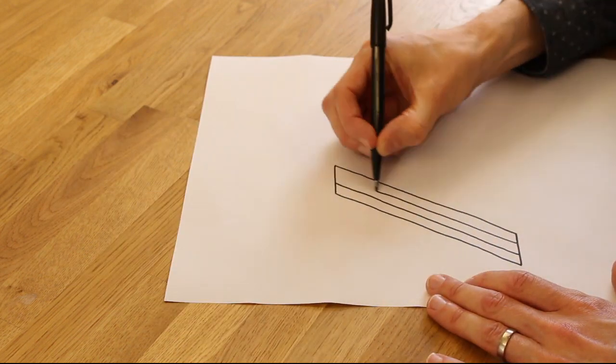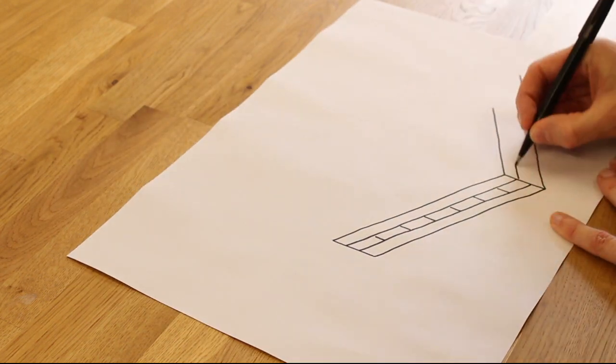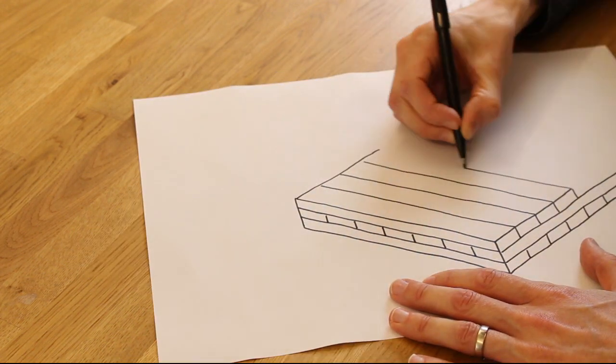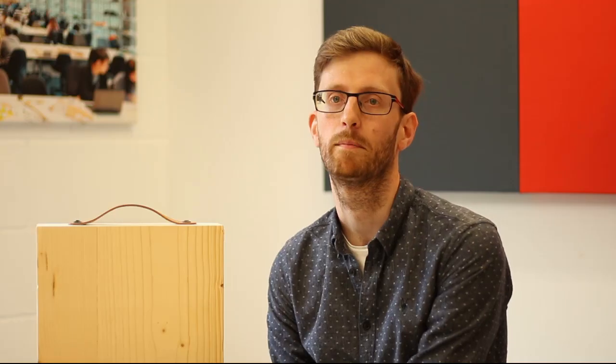Connections in CLT buildings are generally very simple with floor panels stacked directly on top of wall panels and then screwed together. This makes the structure very quick and easy to put up.